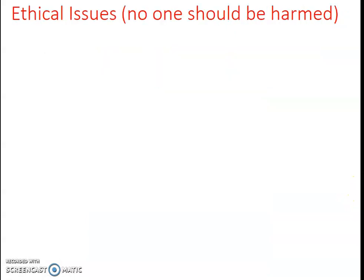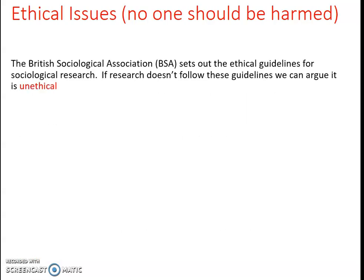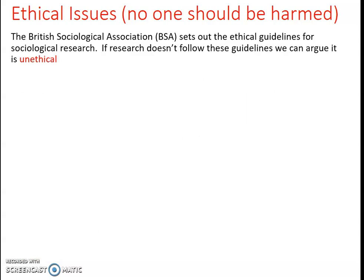The first issue I want to talk about today is ethical issues. For research to be ethical in sociology and other subjects, no one should be harmed. Everybody should walk out of research in exactly the same physical and psychological condition as they started — so no one should be physically hurt or emotionally upset. The British Sociological Association sets out the ethical guidelines for research, and if you don't follow those guidelines you can argue the research is unethical, though it is quite complex to achieve 100% ethical research.